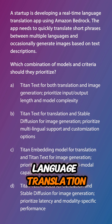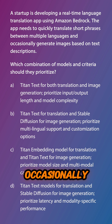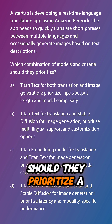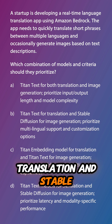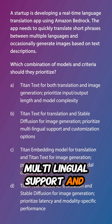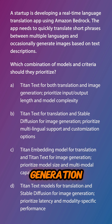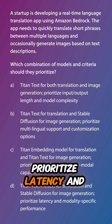Let's do a review question to finish off. A startup is developing a real-time language translation app using Amazon Bedrock. The app needs to quickly translate short phrases between multiple languages and occasionally generate images based on text descriptions. Which combination of models and criteria should they prioritize? A: Titan Text for both translation and image generation — prioritize input-output length and model complexity. B: Titan Text for translation and Stable Diffusion for image generation — prioritize multilingual support and customization options. C: Titan Embedding model for translation and Titan Text for image generation — prioritize model size and multimodal capabilities. Or D: Titan Text models for translation and Stable Diffusion for image generation — prioritize latency and modality-specific performance.